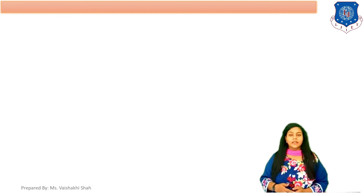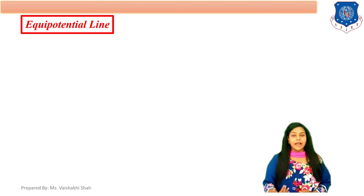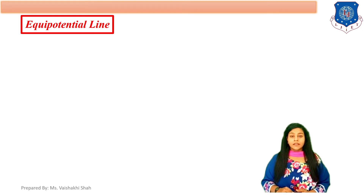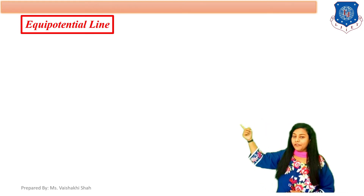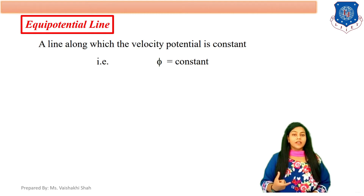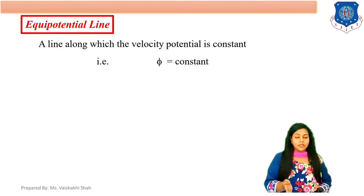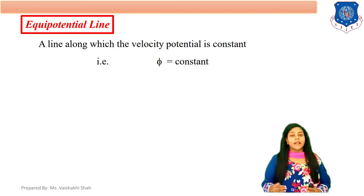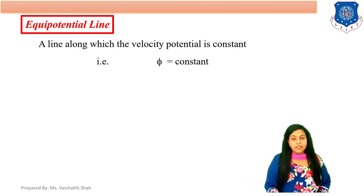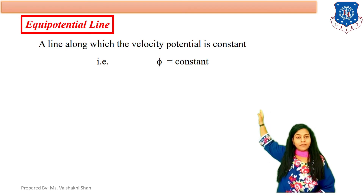Moving further, the next theory is equipotential line. We discussed velocity potential function phi. An equipotential line is a line along which the velocity potential function is constant. The line connecting points where velocity potential function phi is constant is called an equipotential line. So for an equipotential line, phi equals constant, and therefore d phi equals 0.